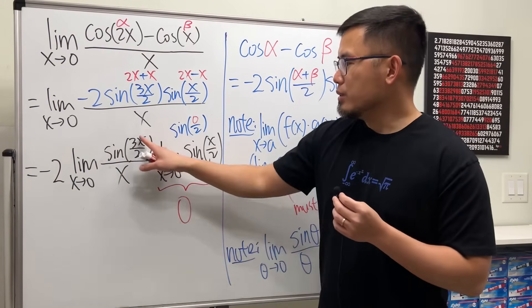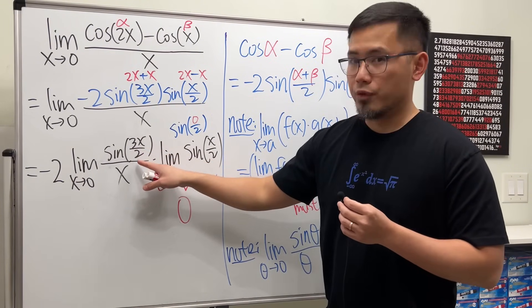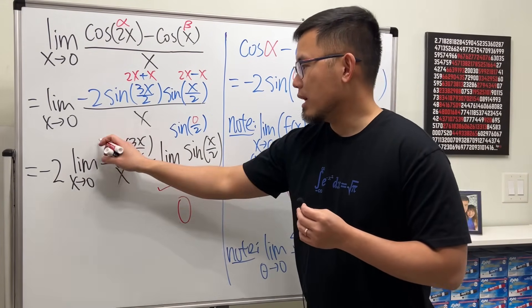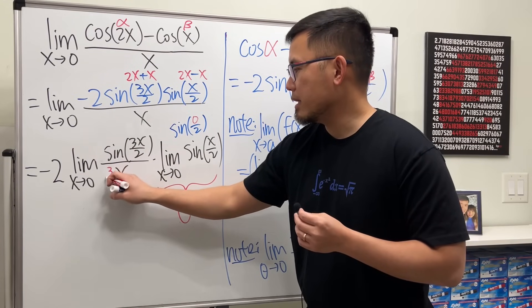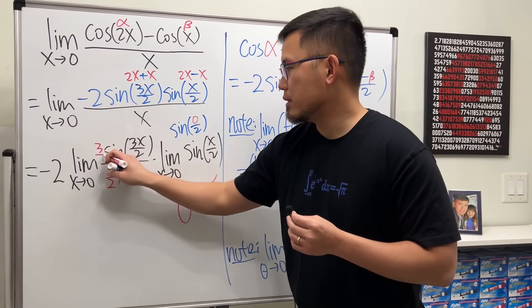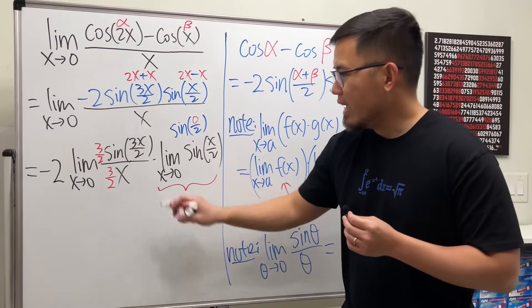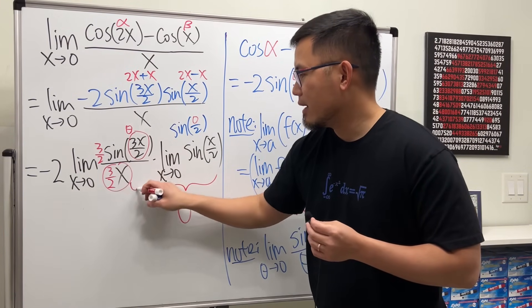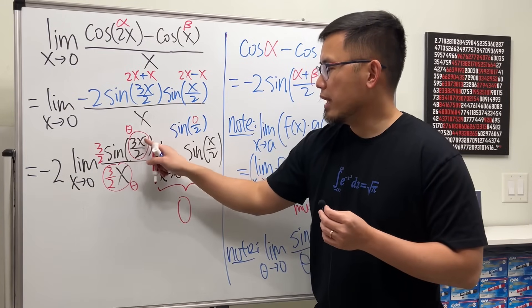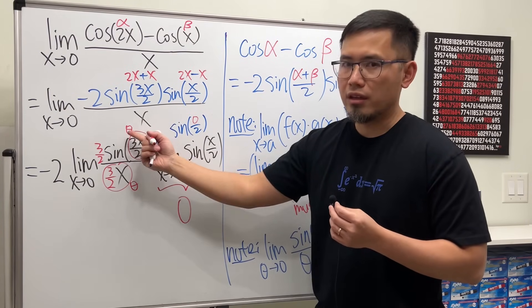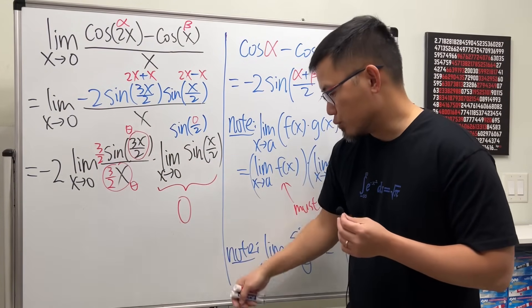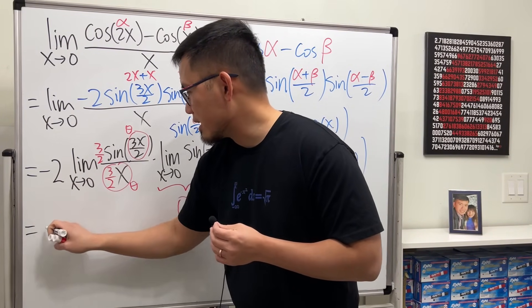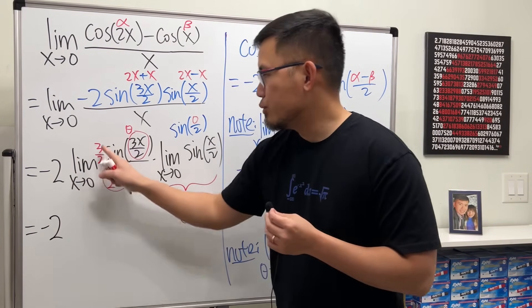Notice the input here is 3x over 2, this is just x. What we can do is on the top and bottom multiply by 3 over 2. How's that? And then we can call this to be theta. As x goes to 0, 3x over 2, the theta will also go to 0, so that is super nice.